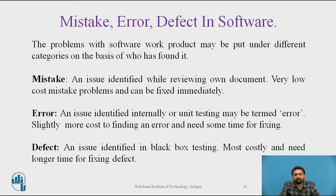An error is an issue identified internally or during unit testing — slightly more costly to fix and needs some time. An error is a mistake, misconception, or misunderstanding on the part of the software developer. In this category, we include software engineers, programmers, analysts, and testers. An error is always generated at the time of development, identified while performing testing.